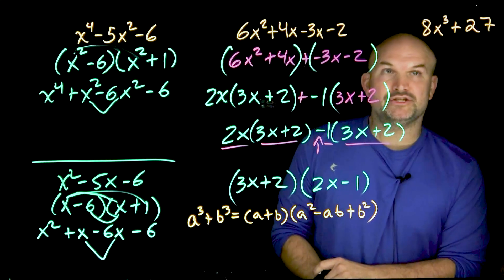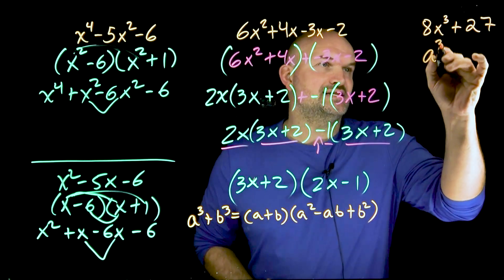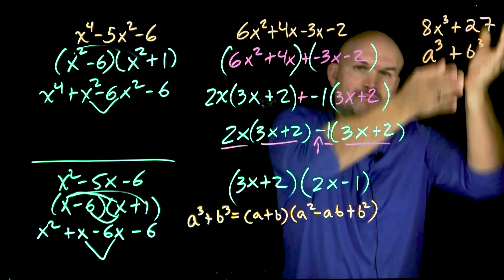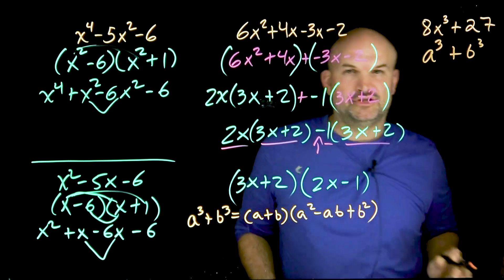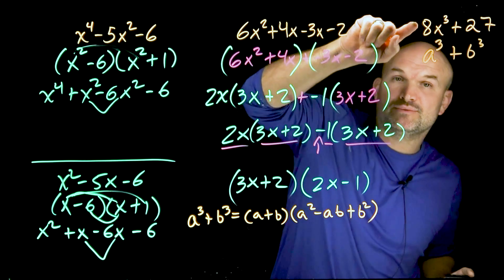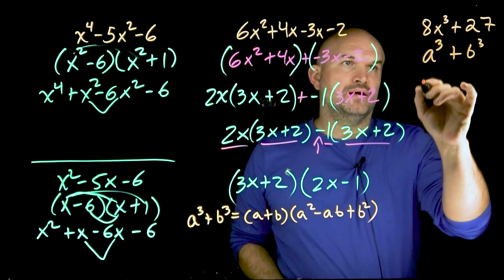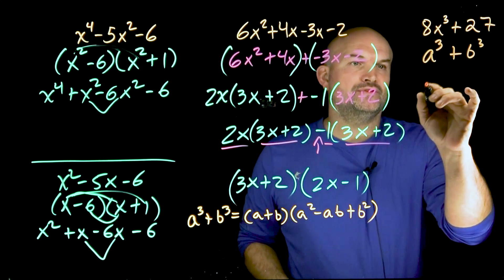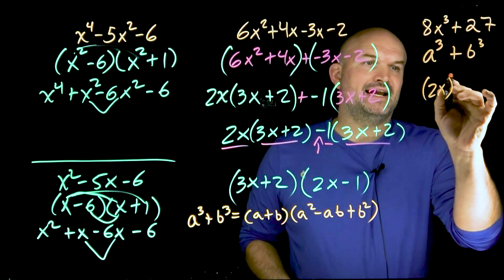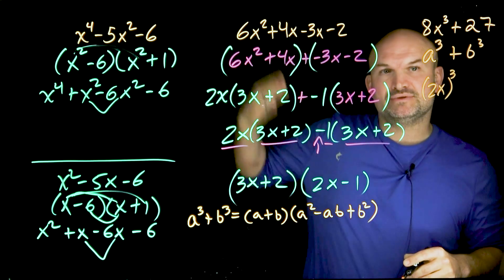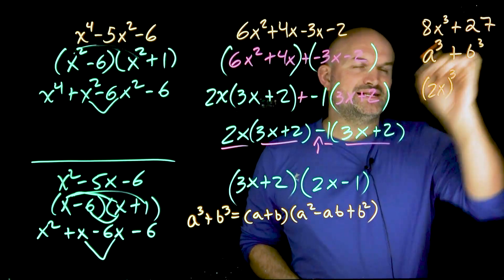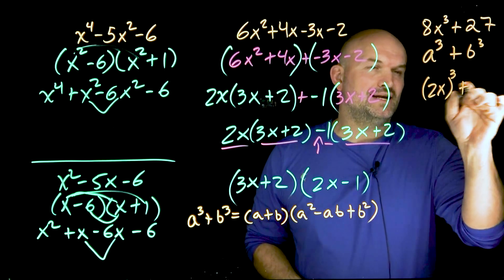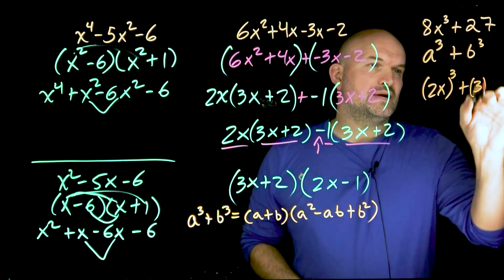So what we need to be able to do is identify, is this in that format? Can I rewrite this first term as something cubed and the last term as something cubed? Well, obviously you see the x cubed. So that's good, but we have to make sure we have the number as well. So what I see is, can I rewrite eight as a number cubed? And hopefully you recognize, yeah, I can rewrite that as a two cubed, right? Because two cubed, two times two times two equals eight. And then for 27, can I rewrite 27 as a cube number? And the answer is yes, of course I can. That's going to be a three cubed.